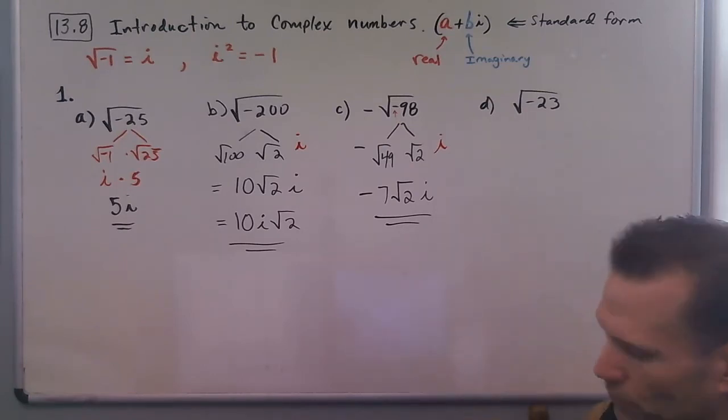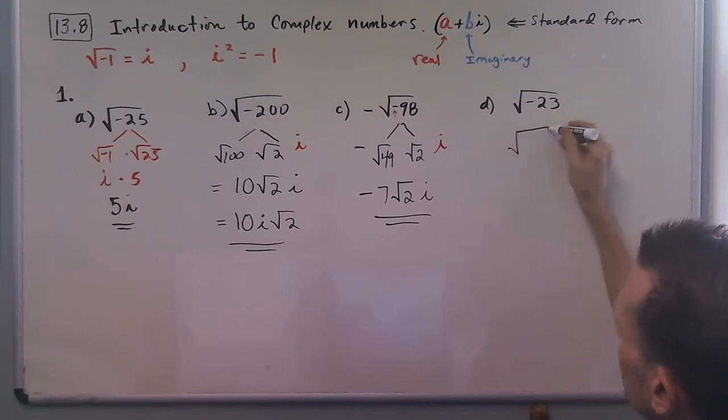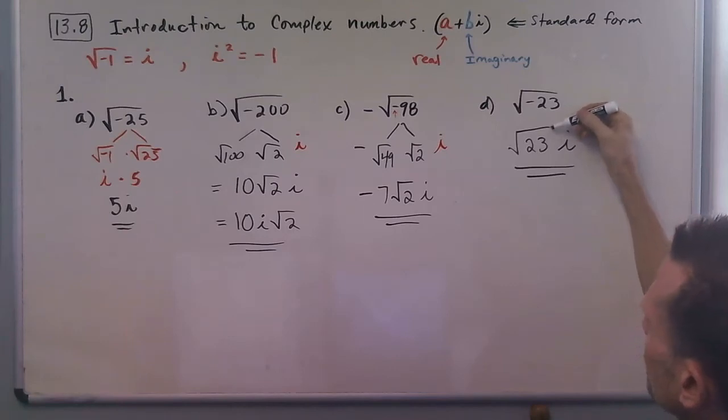And then the last one here, there's not much we can do with that one. 23 is a prime number, but we spot the negative inside there, and so we'll have radical 23i. Okay, be careful here, make sure that the radical ends right here, it doesn't go over the i.